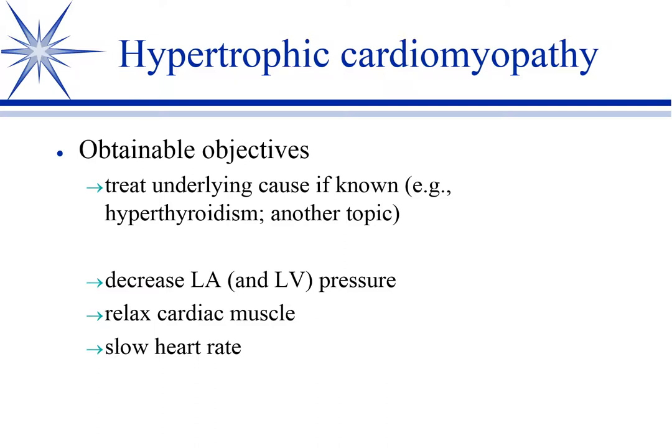At least part of it can be idiopathic, so we have to work on that. We're going to decrease our left atrial and left ventricular pressures so we don't get pulmonary edema and pleural effusions, and we're going to try to relax the heart muscle. A good way to think of hypertrophic cardiomyopathy is like the athlete who has taken anabolic steroids and become muscle bound - lots of muscle, but lost all flexibility. So we're going to relax the heart muscle and slow the heart rate, because cardiac output has dropped.